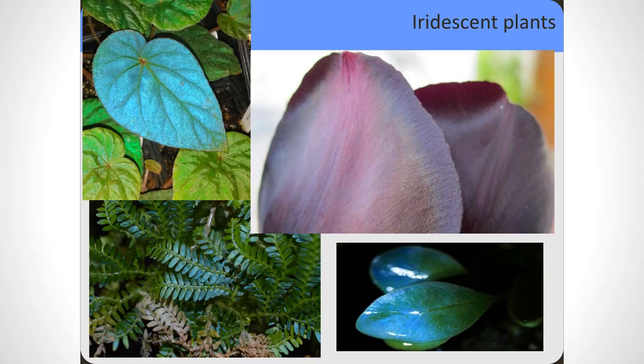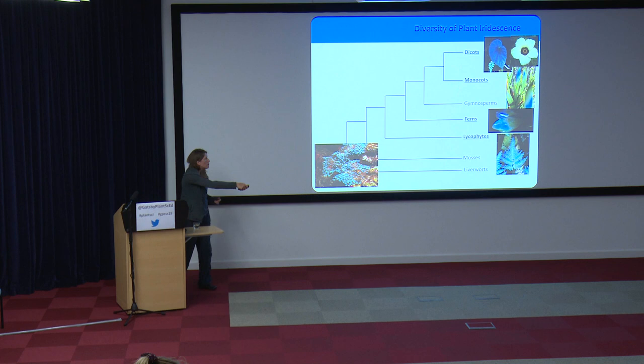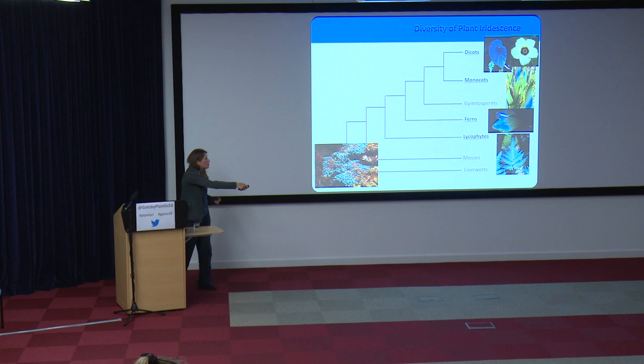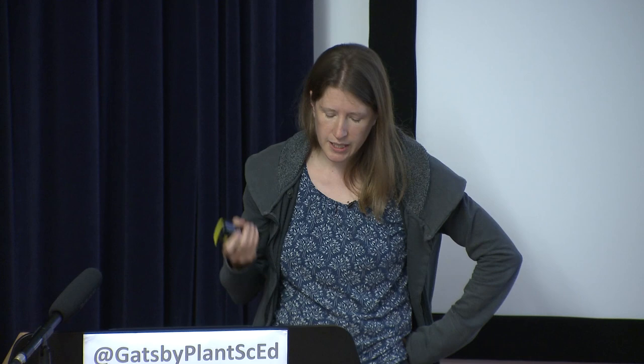I'm not going to talk about flowers — I'm going to talk about leaves. Here are three examples of plant iridescence in three very different groups: begonias, Selaginella, and Elaphoglossum, which is a fern. Iridescence is found in lycophytes, non-flowering plants, ferns, dicots like begonia, and monocots. You also find iridescence in a range of different algae and seaweeds, both red and brown algae, but I'm going to stick with plants for now.